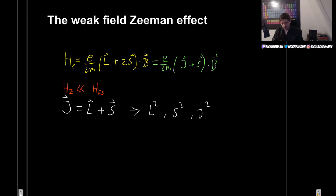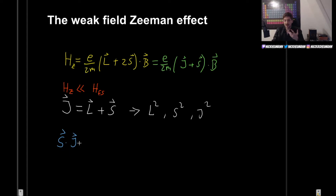If we want to find the projection of S in the J direction, we can take S dot J. The problem is that this gives us simply a number, and we still want to include the fact that it is a vector. So, since we started with S as a vector, we can't just end up with a number, so let's multiply by J again.